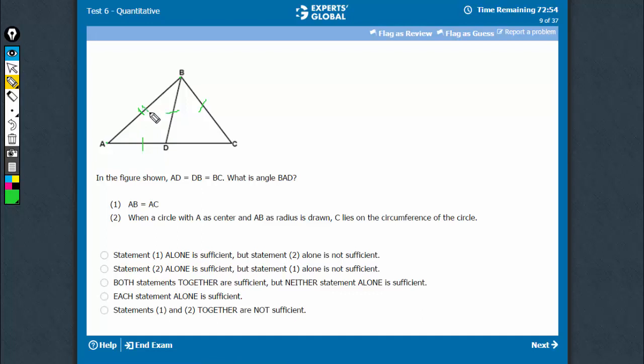That means, indirectly, it is saying AB is equal to AC. So, indirectly, it is the same thing. It is the same message conveyed in a different way. So, if statement 1 was sufficient, statement 2 is also sufficient.